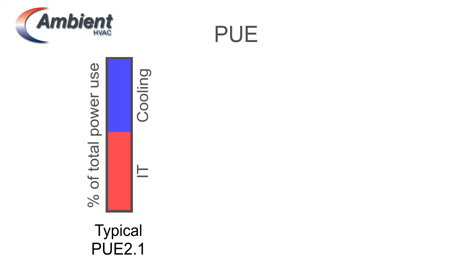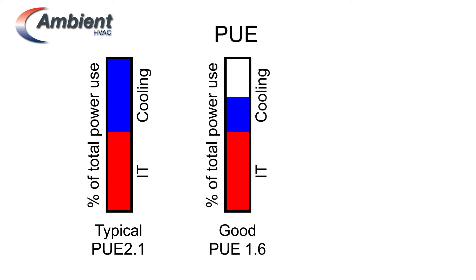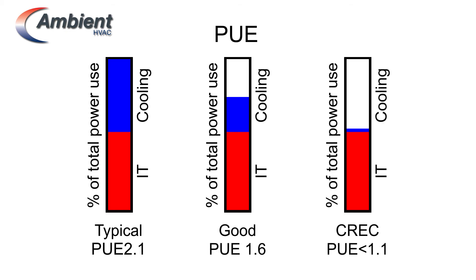PUE is a common measure of the power efficiency of data centres. The lower the PUE, the greater the efficiency. By vastly reducing the cooling power required, CREC can help achieve PUEs of lower than 1.1, freeing power capacity for other use.